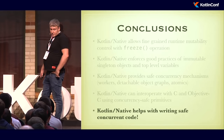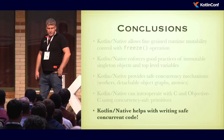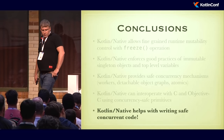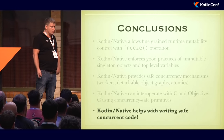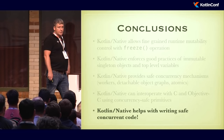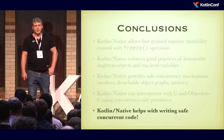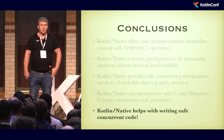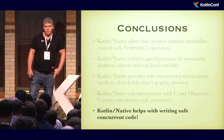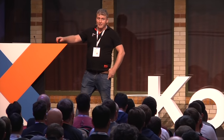Conclusions: We provide runtime mutability control with the freeze operation. We try to enforce good practice of immutable singleton objects and top-level variables — and we even found mistakes in our own runtime implementation once we implemented freeze. There are very unexpected sources of state sharing and potential races. We provide safe concurrency mechanisms such as workers, detachable object graphs, and atomics. We can interoperate with external languages and runtimes using these concurrency-safe primitives. As a result, Kotlin Native allows writing safe concurrent code — if it compiles and runs, it's guaranteed to never encounter any form of deadlock or race condition.